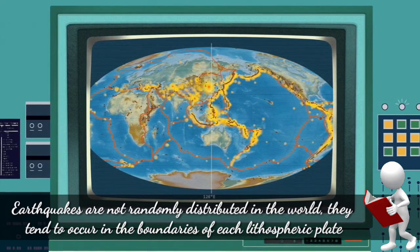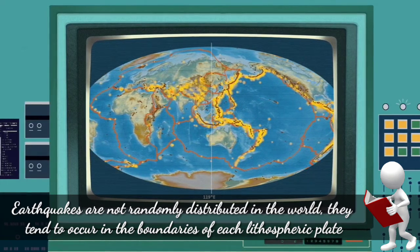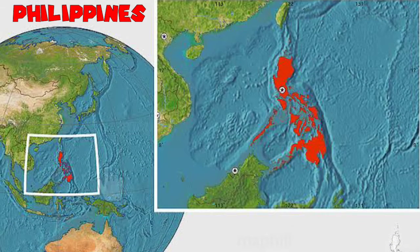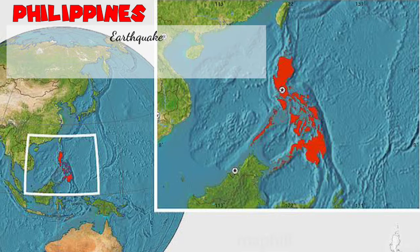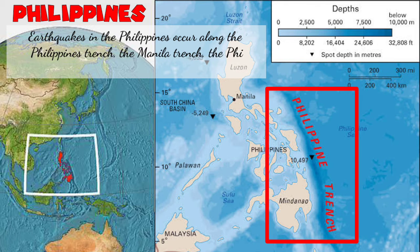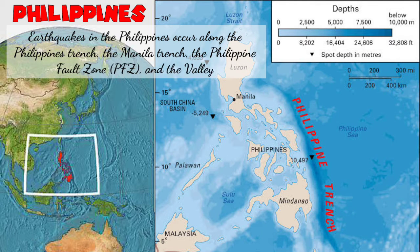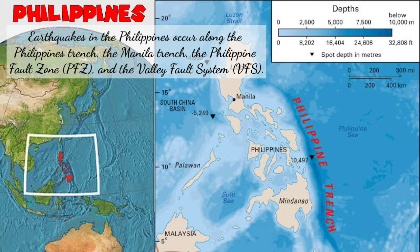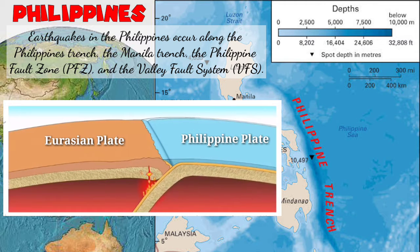Countries along the plate boundaries experience over a thousand earthquakes yearly. The Philippines, for example, is located in one of the most active tectonic settings in Asia. Earthquakes in the Philippines occur along the Philippine Trench, the Manila Trench, the Philippine Fault Zone, and the Valley Fault System. The Philippine Trench, the primary source of earthquakes, was built by subduction of the western edge of the Philippine Plate beneath the Eurasian Plate.